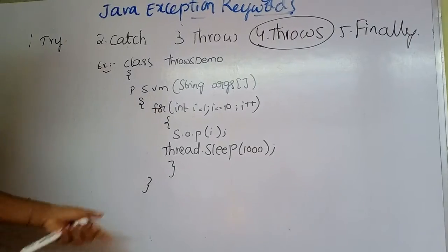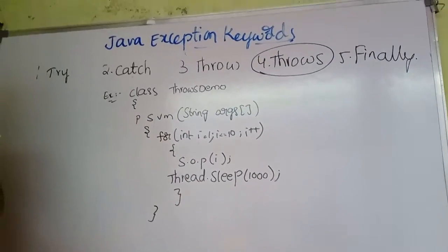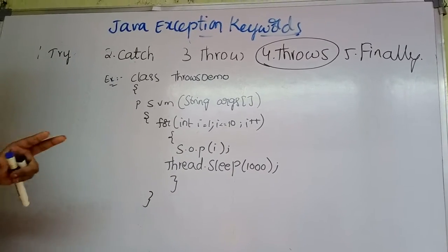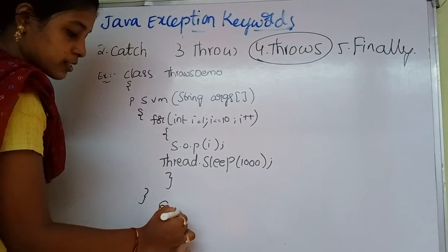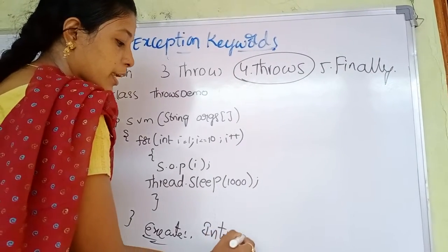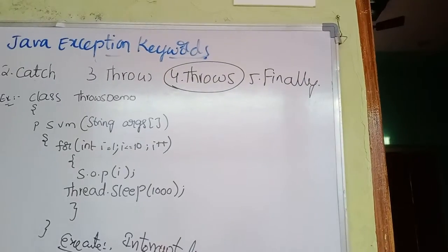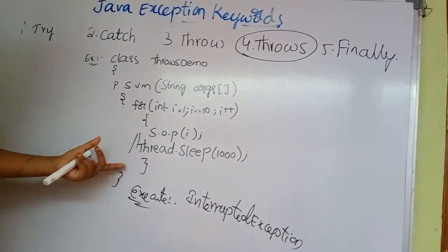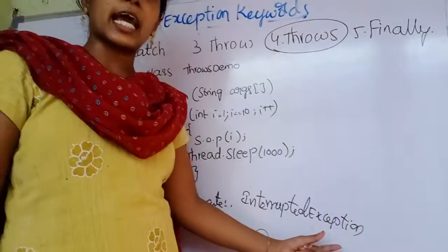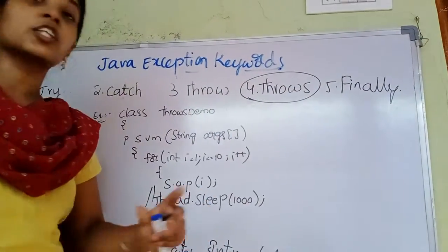Inside this method we can write Thread.sleep(1000). If we write Thread.sleep, each statement in the program will have an error. When we compile this program it will throw an error. When we execute this method, it will show an InterruptedException. Whenever this statement occurs, it will display an InterruptedException. This InterruptedException can be resolved by using the throws keyword.